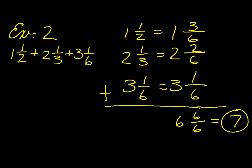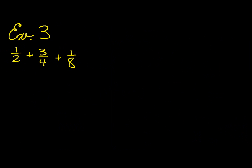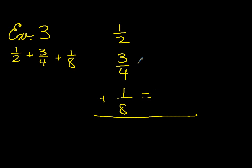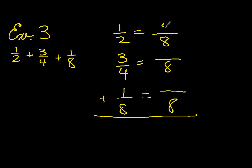Example number three: one-half plus three-fourths plus one-eighth. Again, we're going to come up with a common denominator. In this case, it happens to be eight. Two goes into eight four times. Four times one is four. Four goes into eight two times. Two times three is six. And eight goes into eight one time. One times one is one. So when we add them up this time, we have four plus six plus one, which is eleven-eighths.